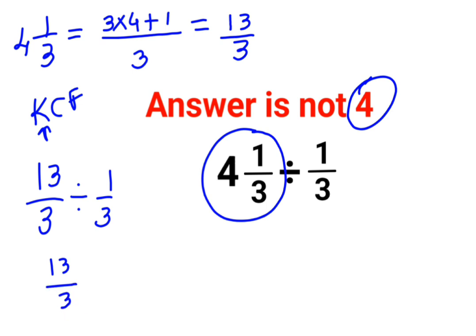C stands for changing the division sign to multiplication. F stands for flipping or taking the reciprocal of 1 upon 3, which is 3. So this cancels, and the answer for this question is supposed to be just 13.